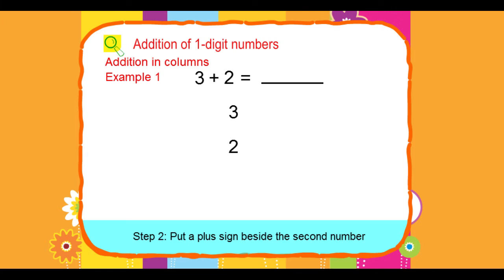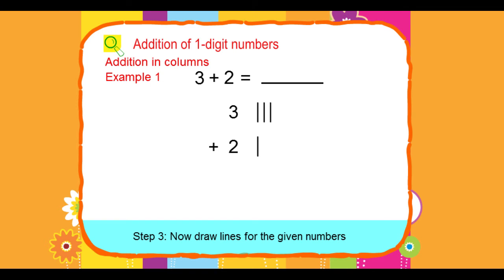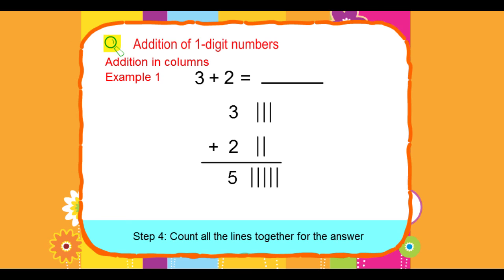Step 2: Put a plus sign beside the second number — 3 plus 2. Step 3: Now draw lines for the given numbers. Step 4: Count all the lines together for the answer.